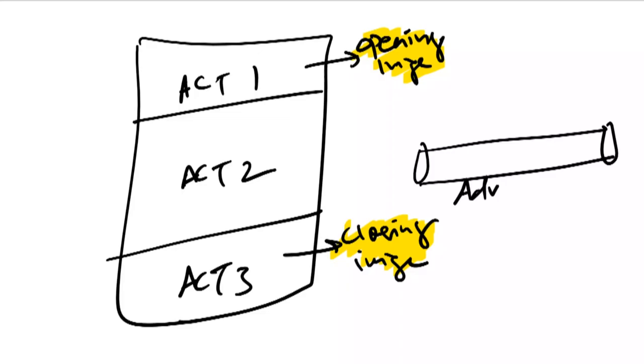Then I take my raw material and I try to fit in where they belong — maybe it's part of the subplot, maybe act one, act two, beginning of act one. And I try to make a sequence. It may not be a sequential thing, but I try to create that structure. By the end of that process, there will be a skeleton — overall, it will look like how the story will flow in a very rough manner. And then I continue that process until I get the proper sequence.